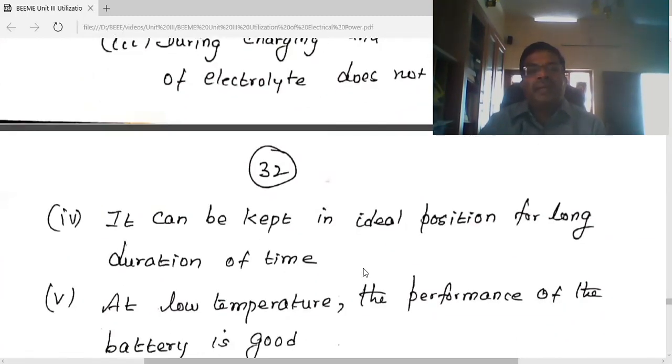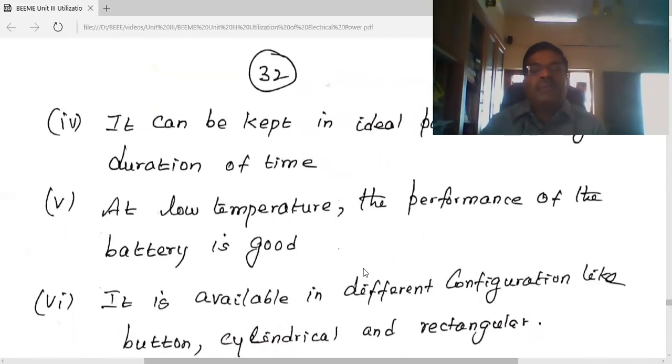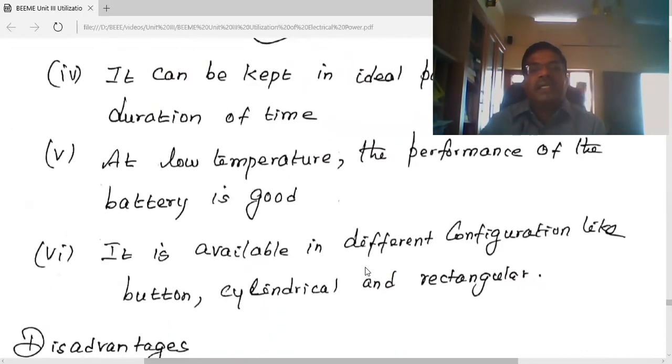The electrolyte composition remains stable. These batteries are available in different shapes like button type, cylindrical, rectangular, etc.